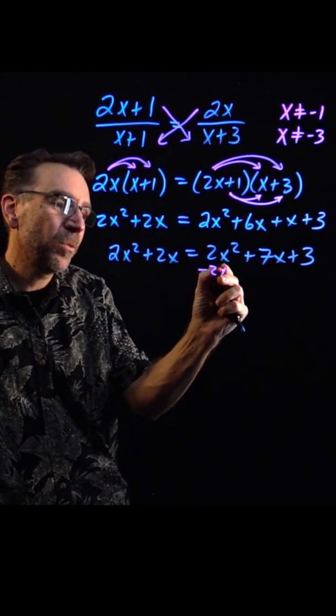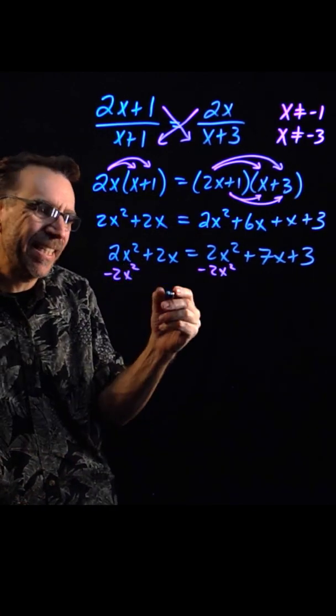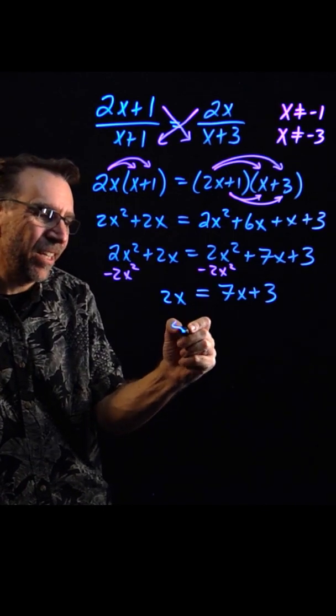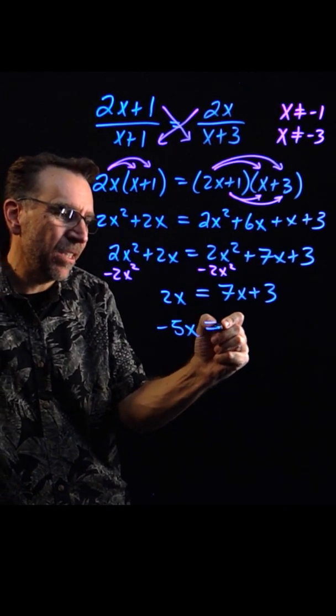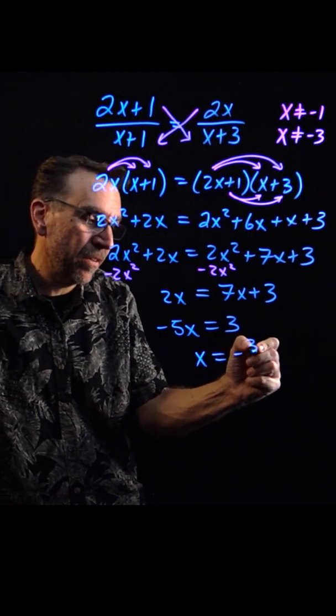Now when I subtract 2x squared on both sides, notice it's the same amount on both sides there, and it just adds to zero. And subtracting 7x, we get negative 5x equals 3. Then dividing by negative 5, we have x equals negative 3 fifths.